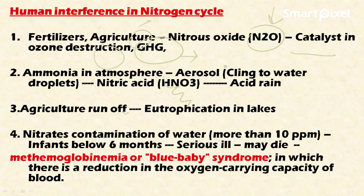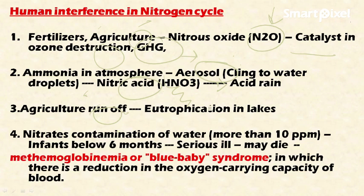Another issue is ammonia in the atmosphere acting as an aerosol, which clings to water droplets, leading to the formation of nitric acid. This dissolves in rainwater and returns to Earth as acid rain, which is very dangerous for all living things. Additionally, agriculture runoff carries fertilizer nitrogen to nearby water bodies, contributing to the growth of plants and blue-green algae blooms, leading to a phenomenon called eutrophication.